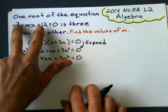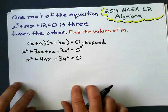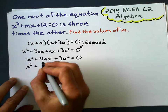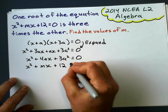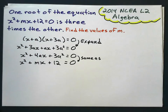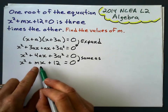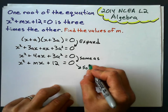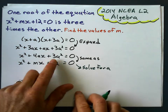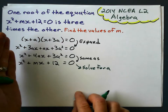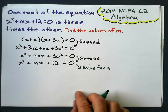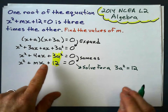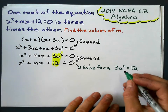This expanded equation has to be equal to the original: x squared plus mx plus 12 equals 0. These are the same equations, they just look different. I can't solve for m yet — I need to solve for a first. Since 3a squared has to equal 12, I'll solve for a and then plug it in to solve for m.